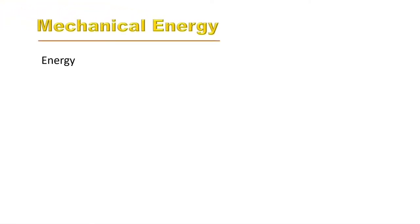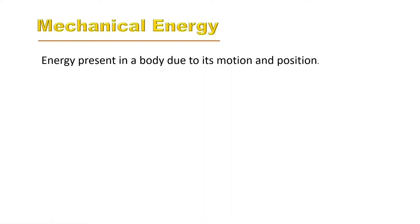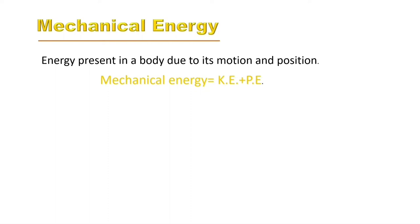First, we will study mechanical energy. Its definition: energy present in a body due to its motion and position is called mechanical energy. As you know, if a body possesses energy due to its motion, that is called kinetic energy, and if a body possesses energy due to its position, that is called potential energy. So when a body can do work due to both its motion and position, that form of energy is called mechanical energy. Mechanical energy equals kinetic energy plus potential energy.